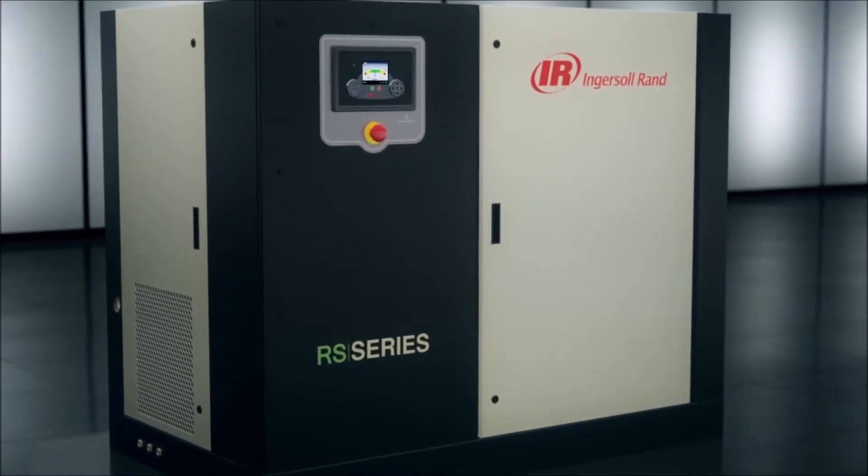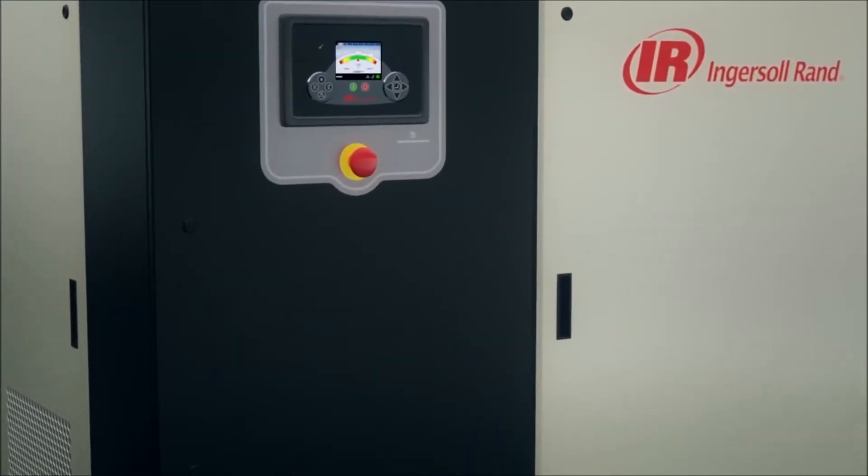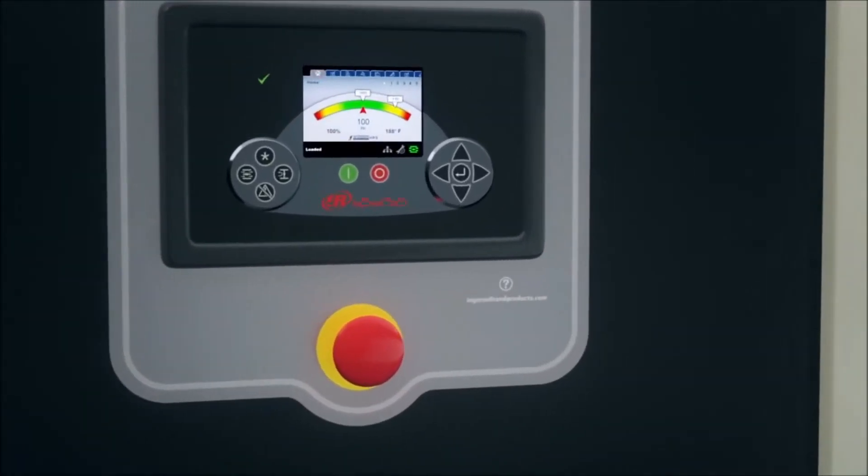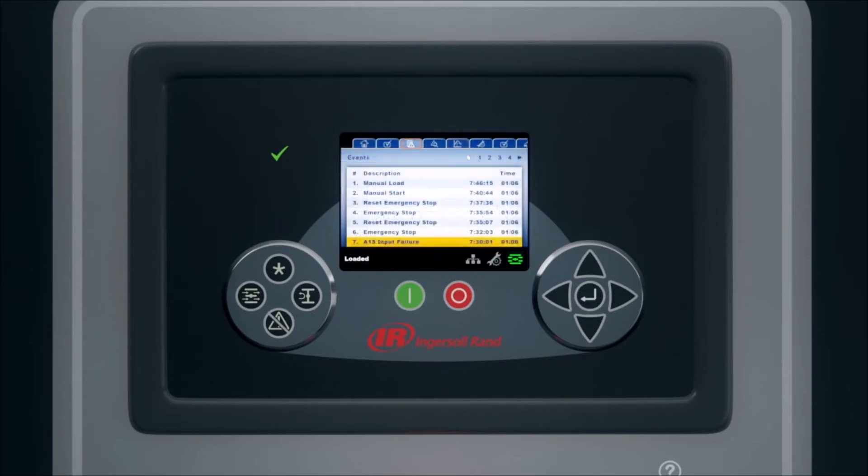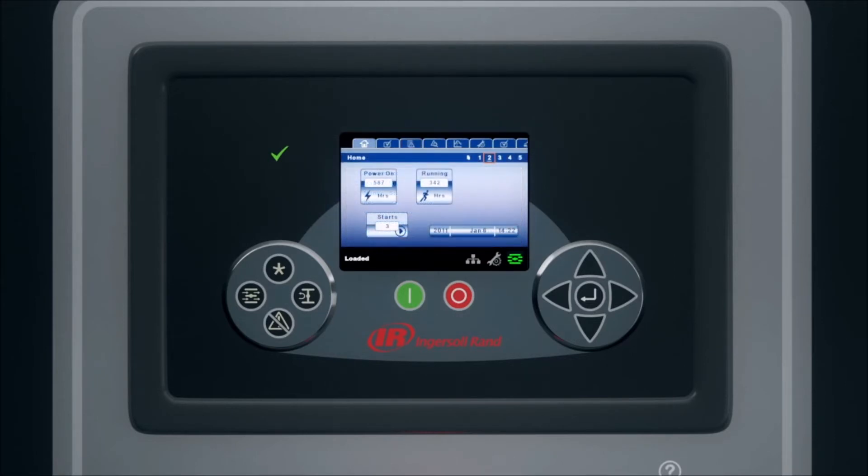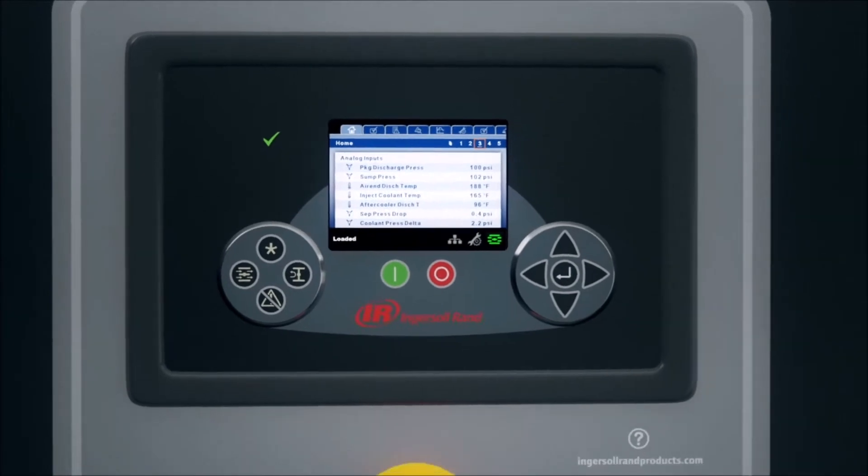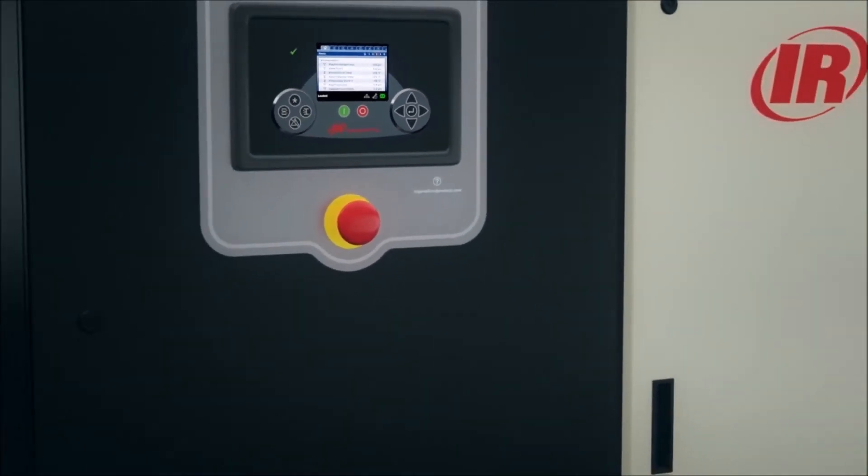The RS series comes equipped with the advanced XE series controller, the state-of-the-art in control systems, complete with an intuitive, high-resolution, large color display that provides actionable information in over 30 languages. Many XE series controllers are available with a real-time clock that can schedule start and stop times to proactively plan maintenance to maximize productivity.